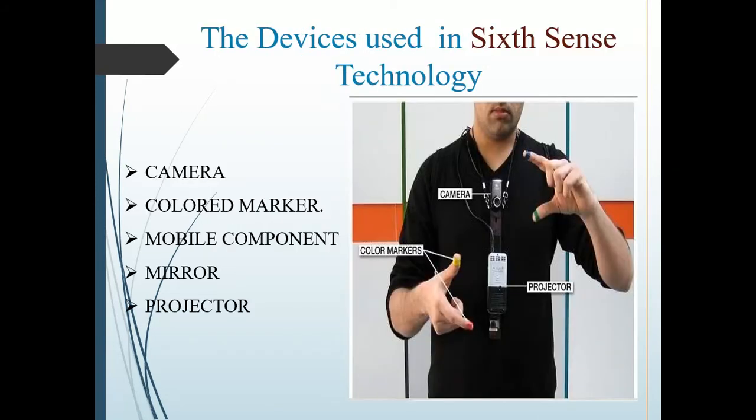These are the devices used in Sixth Sense Technology: Camera, Color Marker, Mobile Component, Mirror, and Projector.